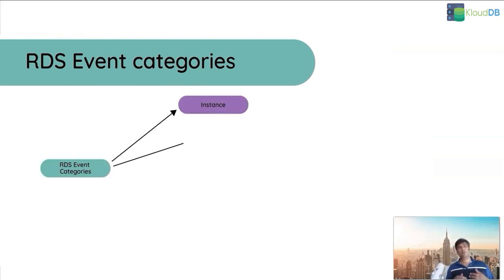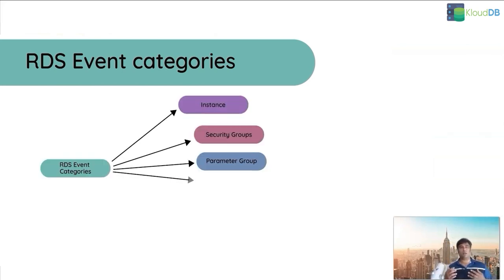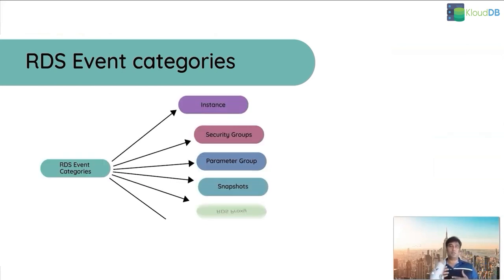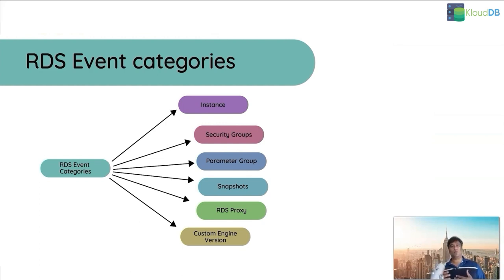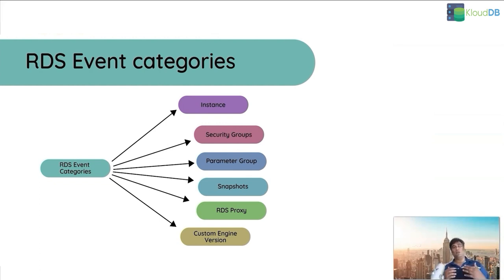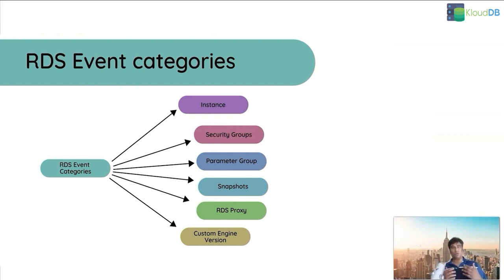There are different types of event categories. There can be instance type event categories, security groups, parameter groups, snapshots, etc. Depending on your needs, you can configure for the source types you need.